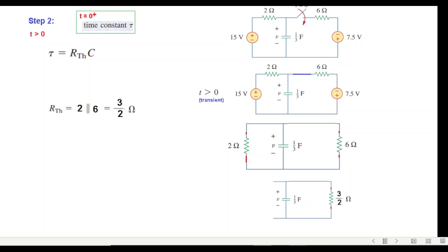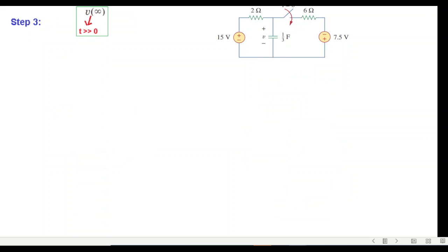Now we can find tau. The formula for tau is R_thevenin times C. R_thevenin we have found, and C is one-third farad, so tau is one-half seconds. This is the second step we have done. Coming on to the third: for t much greater than zero we have to find v(∞).